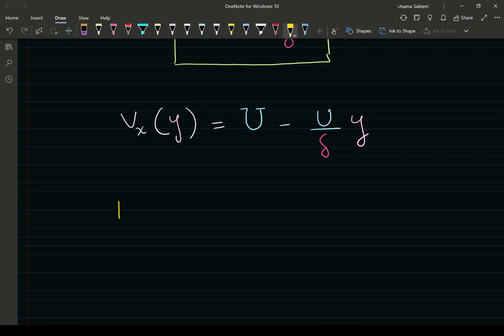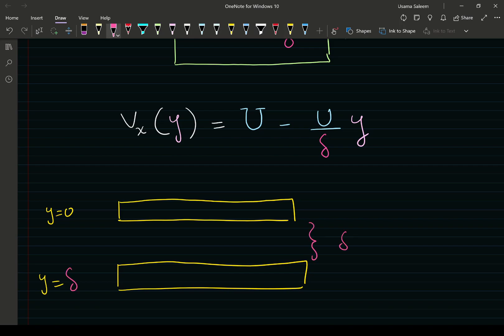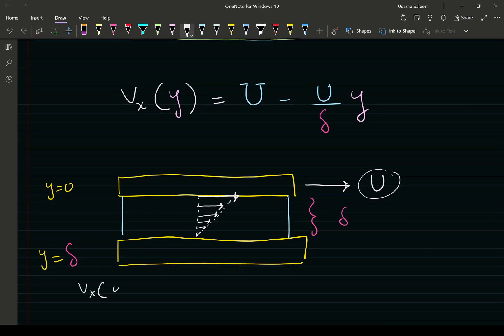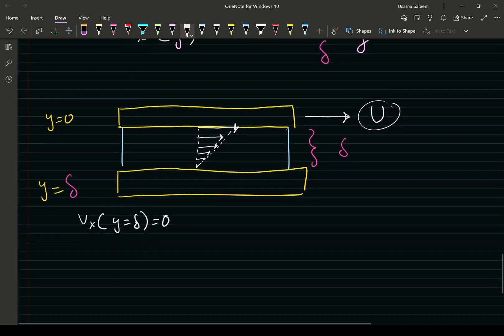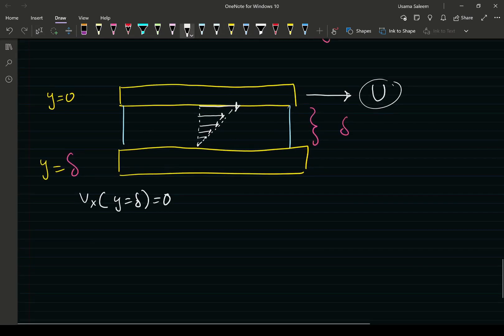My top plate is at y equals 0, and my bottom plate is at y equals delta. The top plate is moving with velocity u. Your velocity profile is going to be linear - a straight line. At y equals 0, maximum value u; at y equals delta, velocity equals 0. Why? Because the bottom plate is stationary, no slip boundary condition.